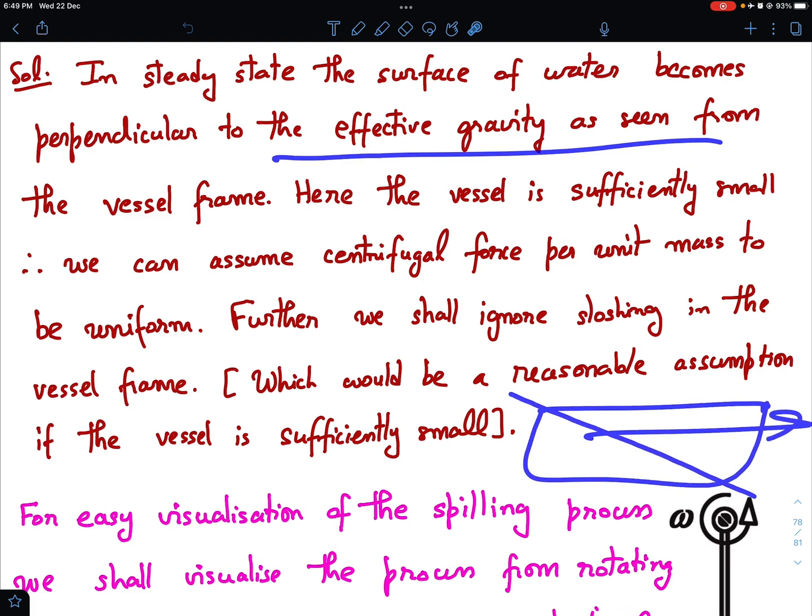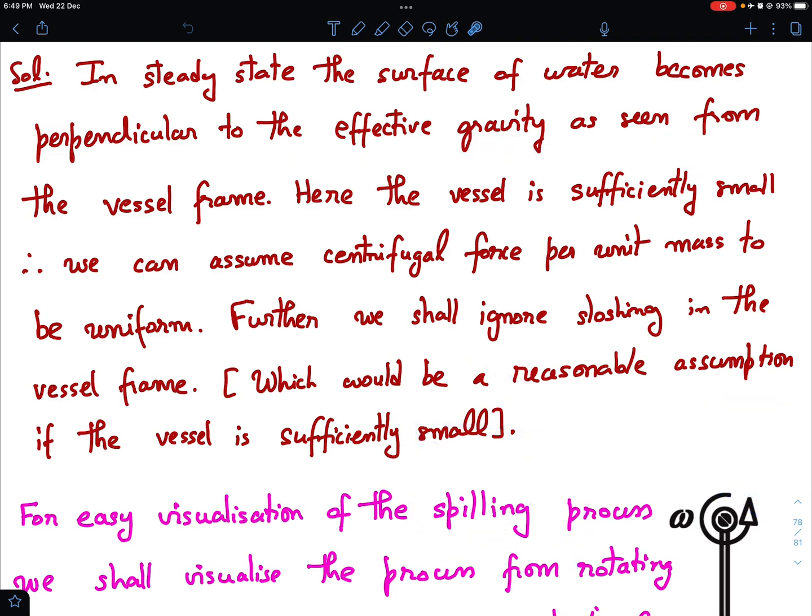Even in accelerated vessels, when vessel is accelerating, the effective gravity is resultant of these two. And then water in the vessel will assume a shape perpendicular to the effective gravity. Effective gravity as seen from the vessel frame.